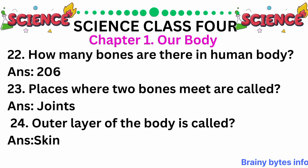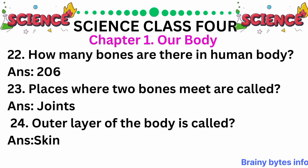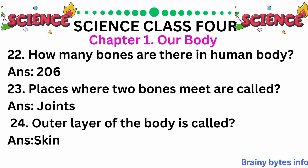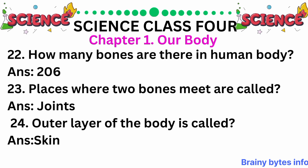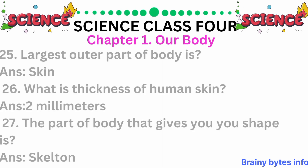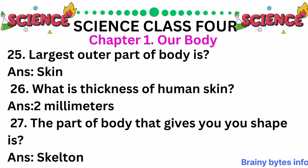How many bones are there in the human body? 206. Places where two bones meet are called joints. The outer layer of the body is called skin. The largest outer part of the body is skin.